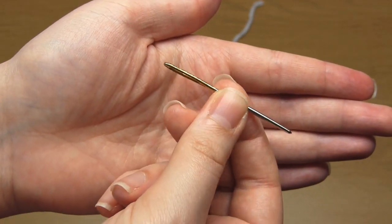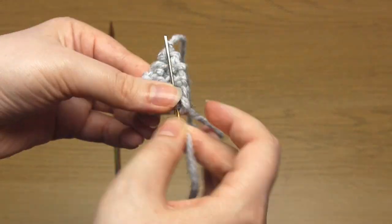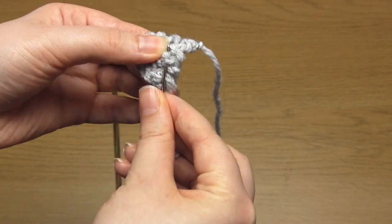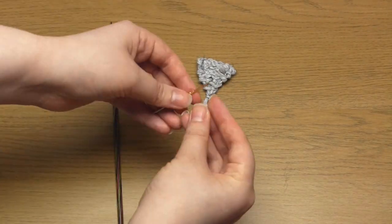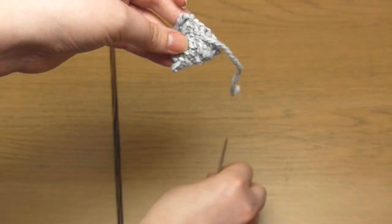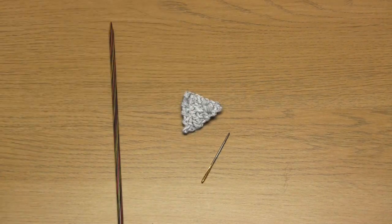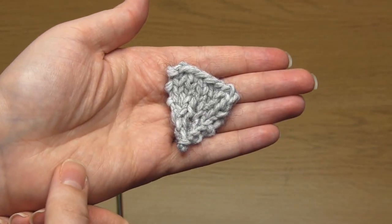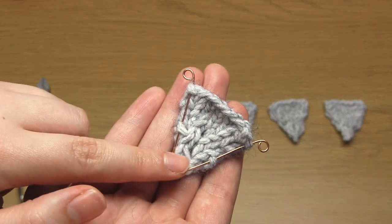Then feed this yarn tail into a yarn needle and weave it into the back of your knitting. Then do the same for the other yarn tail as well. You've now completed 1 triangle. You now just need to repeat this 4 more times.